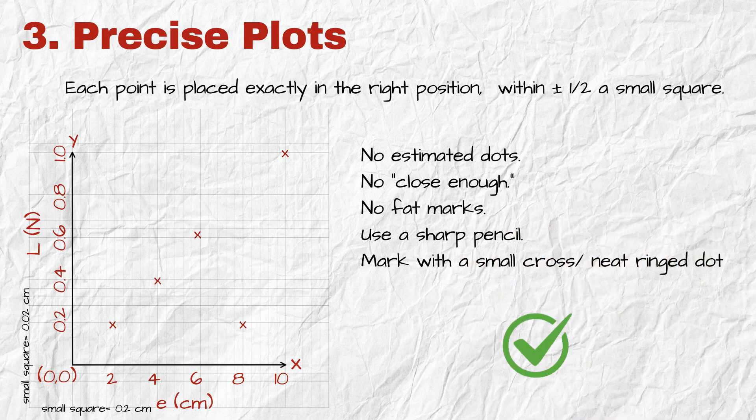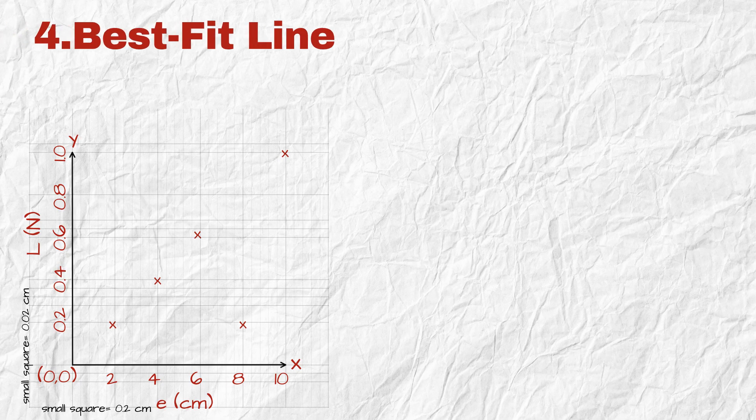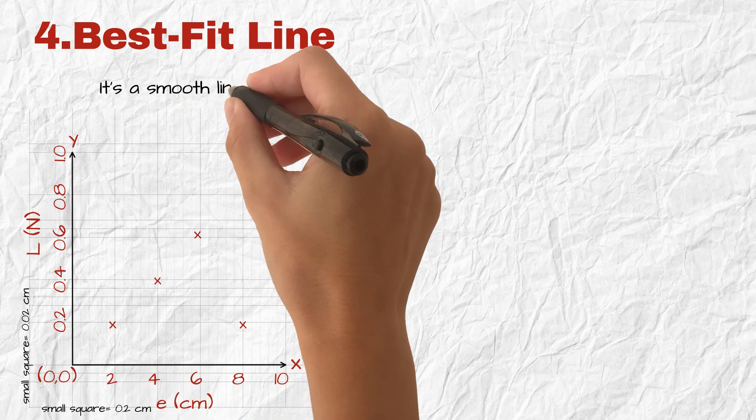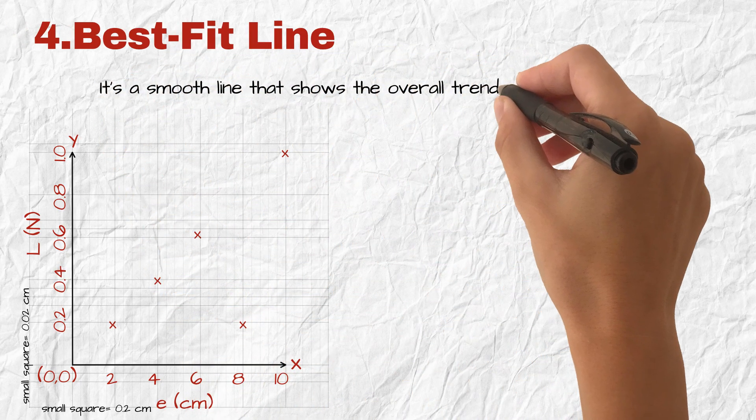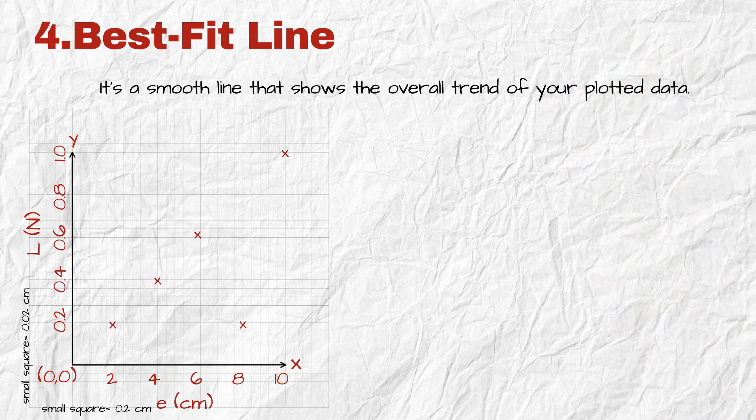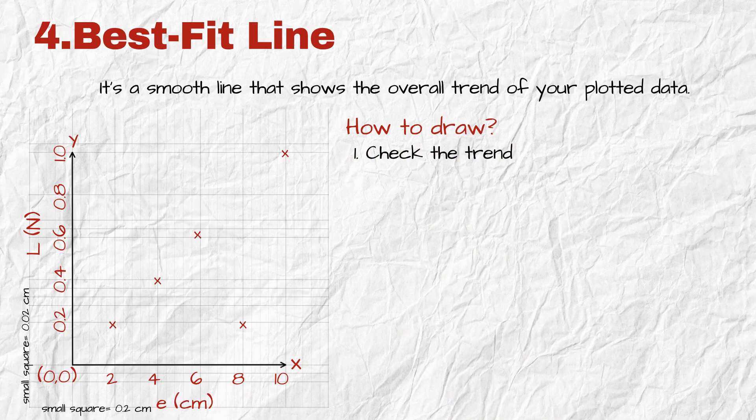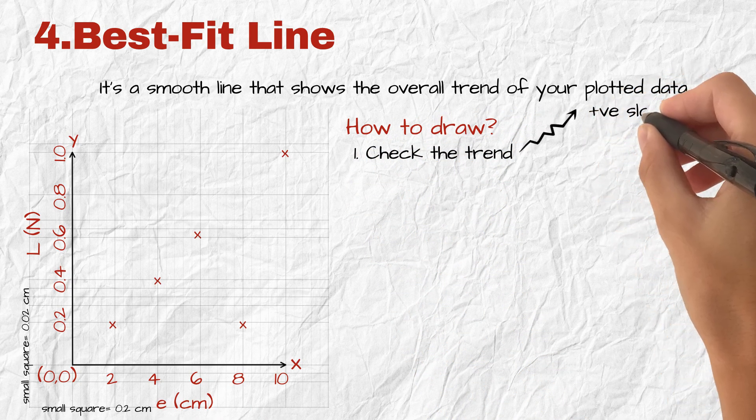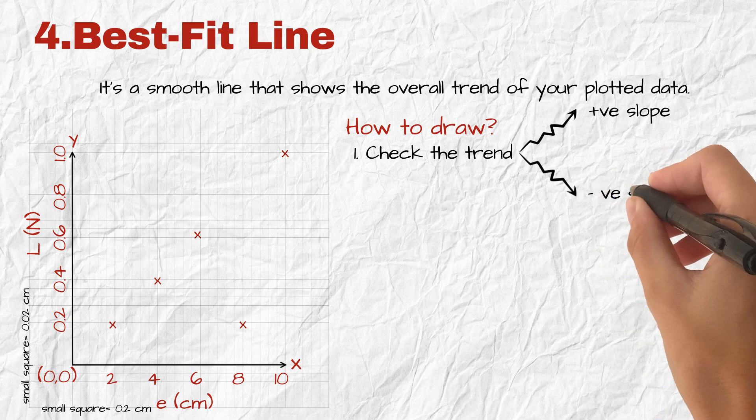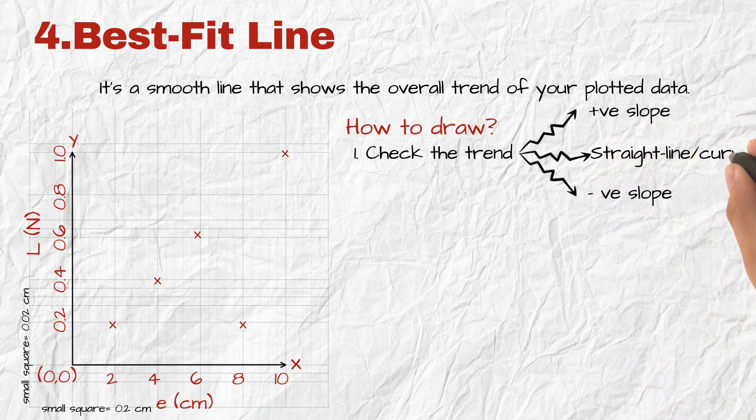Step four, best fit line. What is a best fit line? It's a smooth line that shows the overall trend of your plotted data. It doesn't have to go through every point, but it must follow the general pattern. How to draw it. First, check the trend. Are your points going up? That's a positive slope. Going down? That's negative. Straight line or curve?